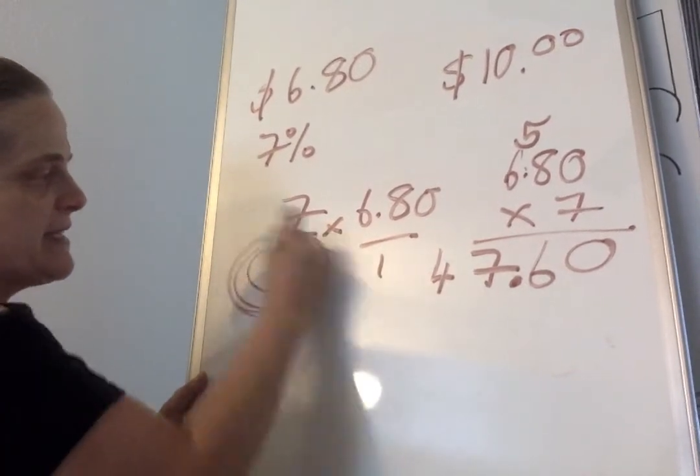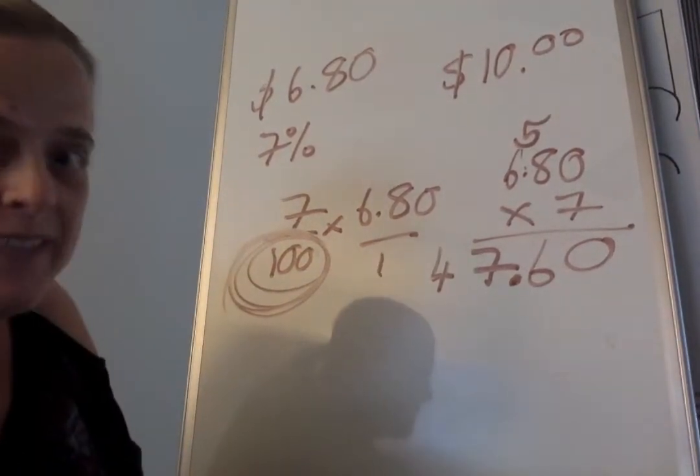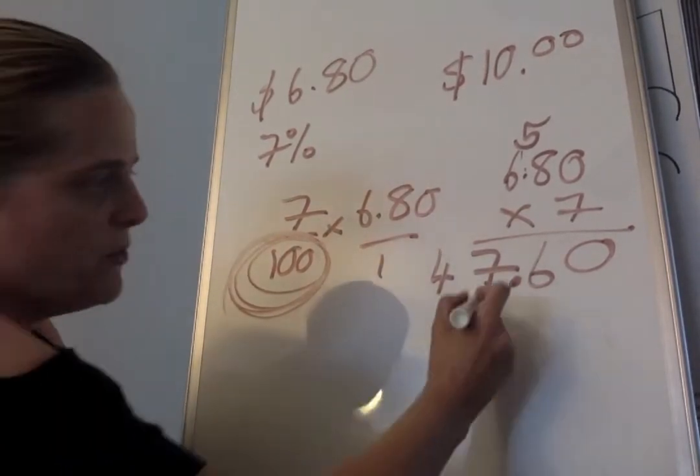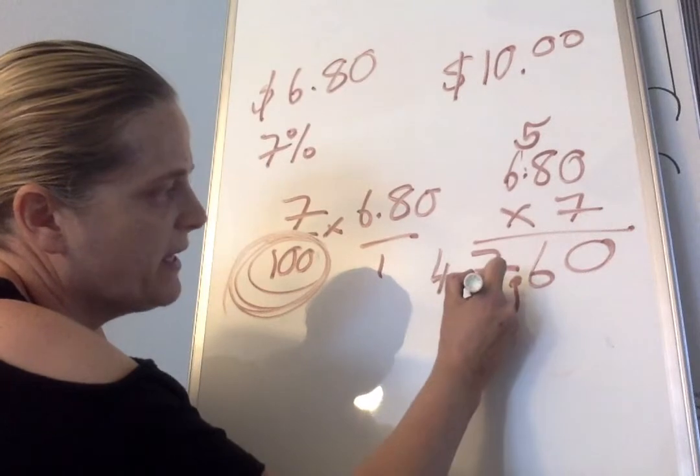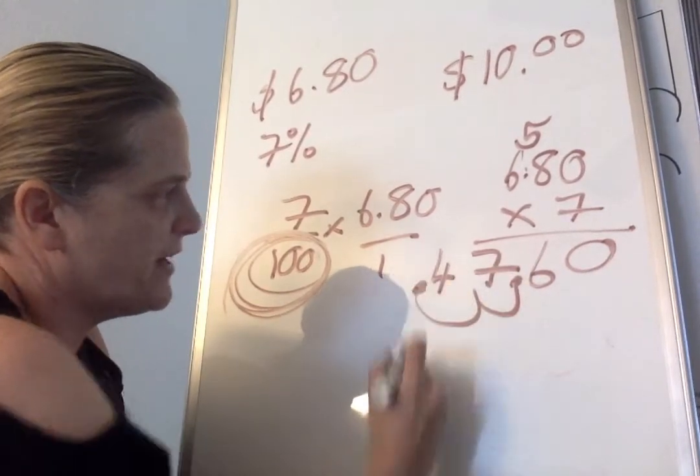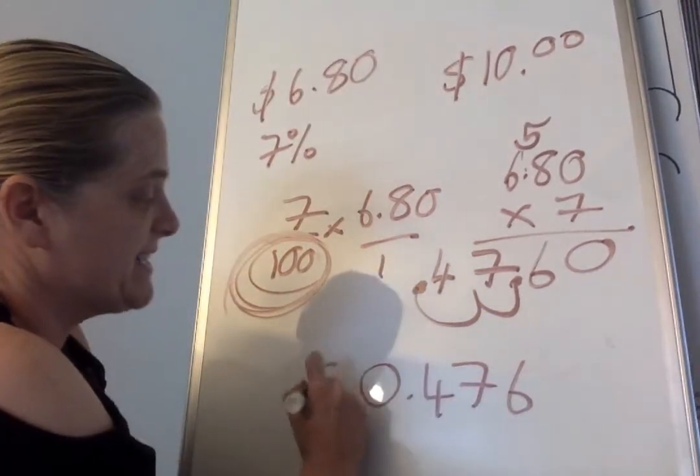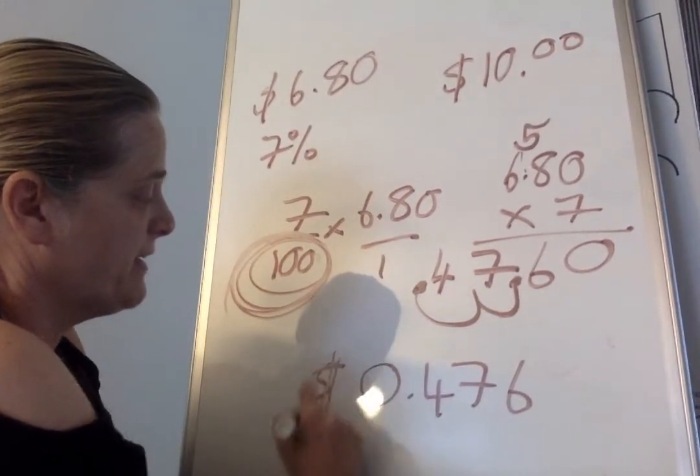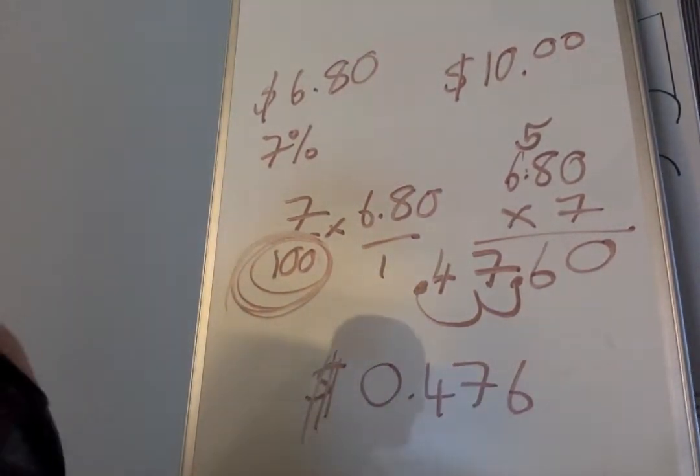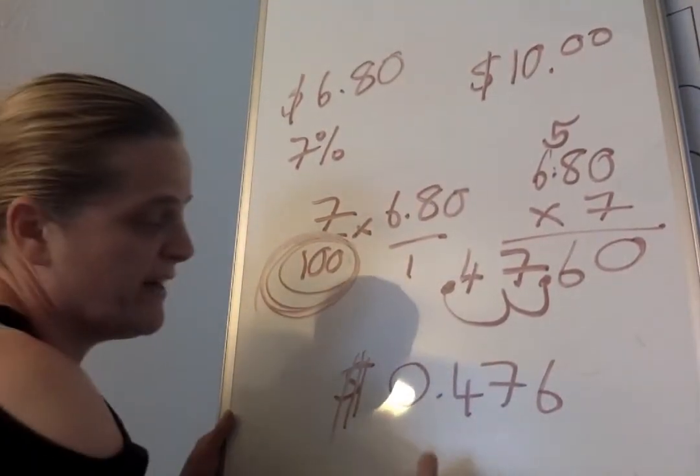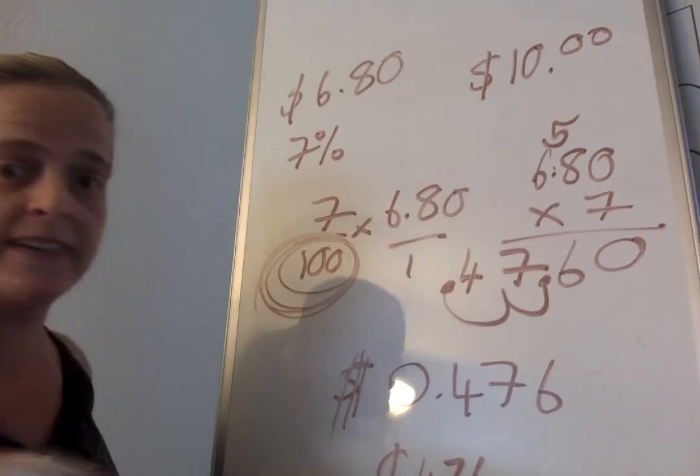Now we're going to take that answer and divide it by 100. Why? Because that's our division there, okay? Instead of dividing by 100, I'm going to move that decimal. There are two zeros. Move the decimal two places. 1, 2. Now, you've got 0.476 cents. This is cents that we're using now, right? I'm still putting the dollar sign because my decimal's there, right? If the dollar sign and decimal wasn't there, you could write it as 476 cents, okay?